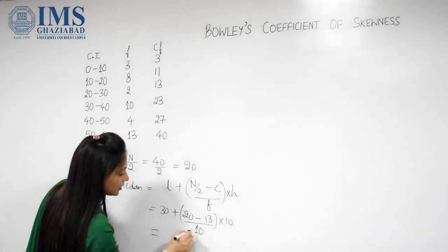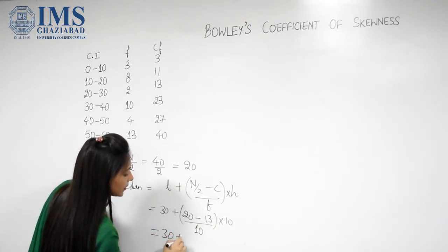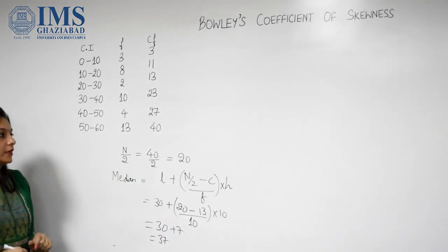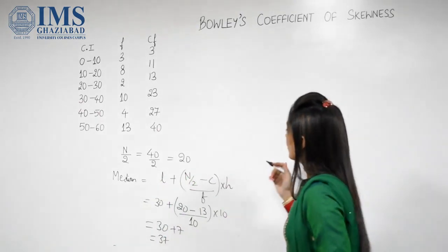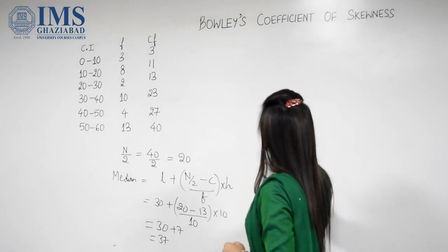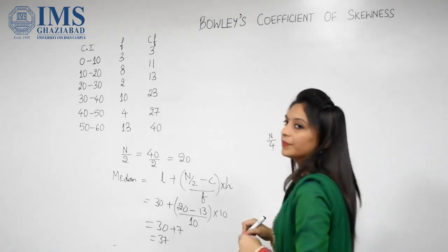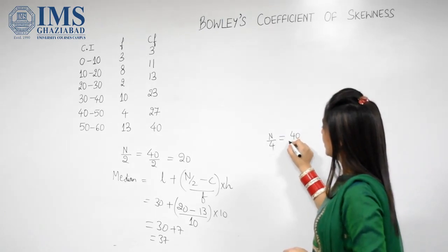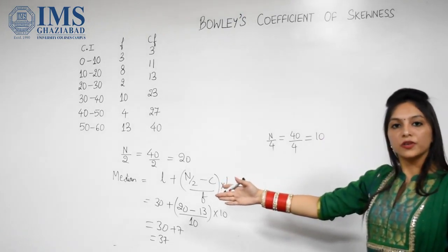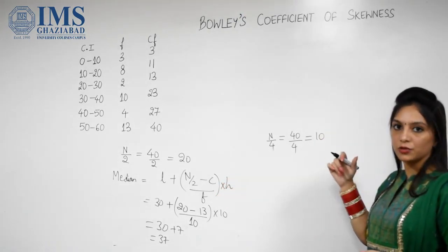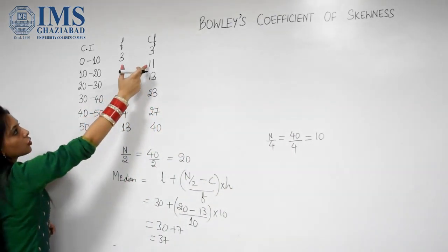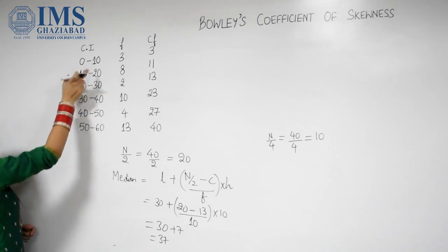Calculating this, we get 30 plus 7, which is 37. So our median comes out to be 37. Now for calculating Q1, we need to calculate N upon 4. N upon 4 means 40 divided by 4, which gives us 10. The first bigger value than 10 in CF is 11, so our Q1 class will be 10 to 20.